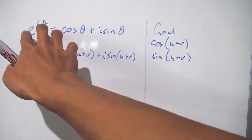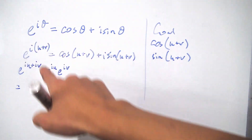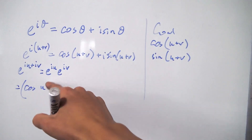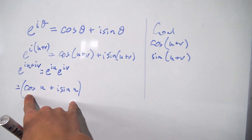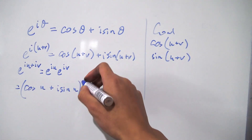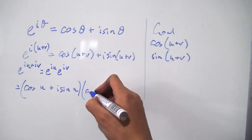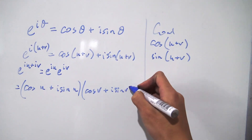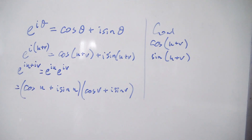Referring back to Euler's formula, we can rewrite each factor by replacing theta with u and v respectively. So we have cosine of u plus i times sine of u, all times cosine of v plus i times sine of v. Notice that we've managed to have only a single angle inside the argument of the cosine and the sine, which is really quite nice.